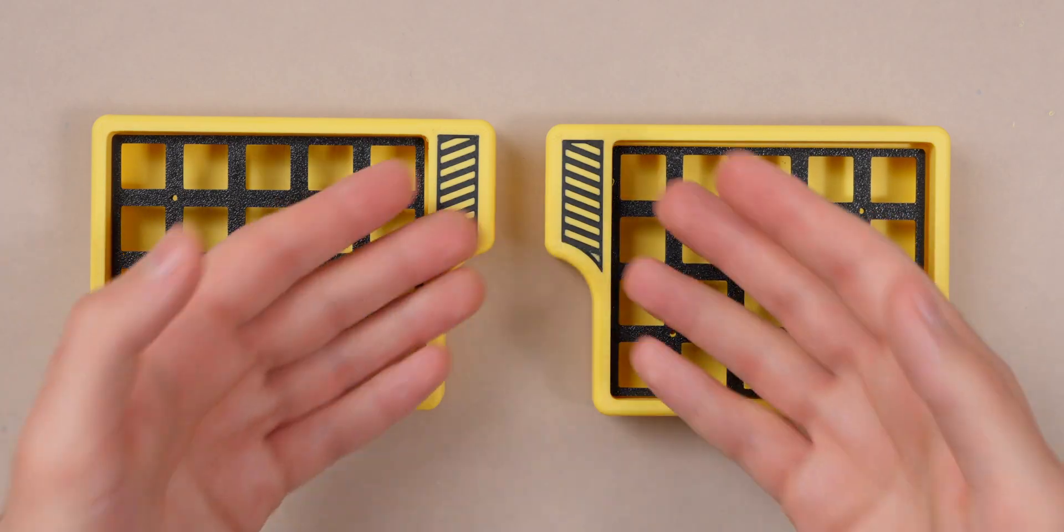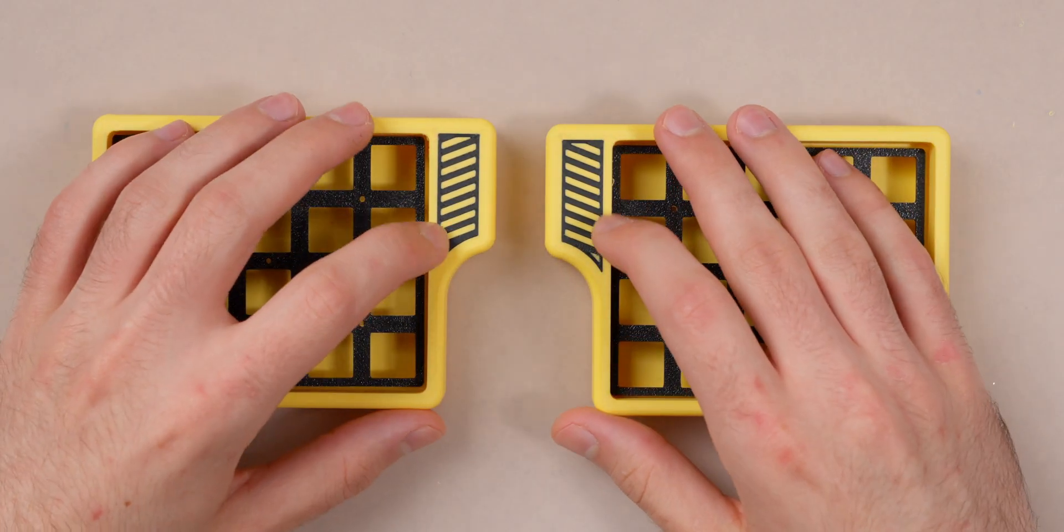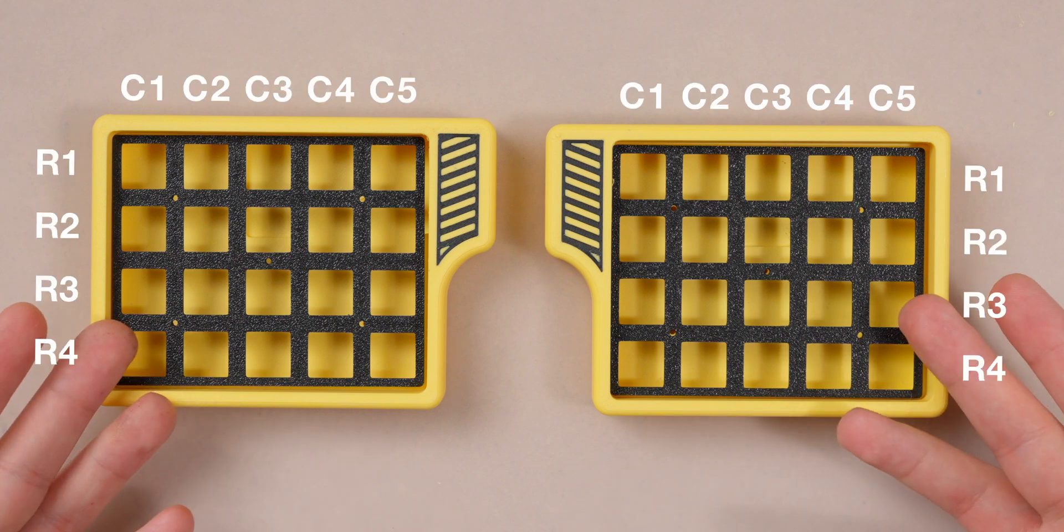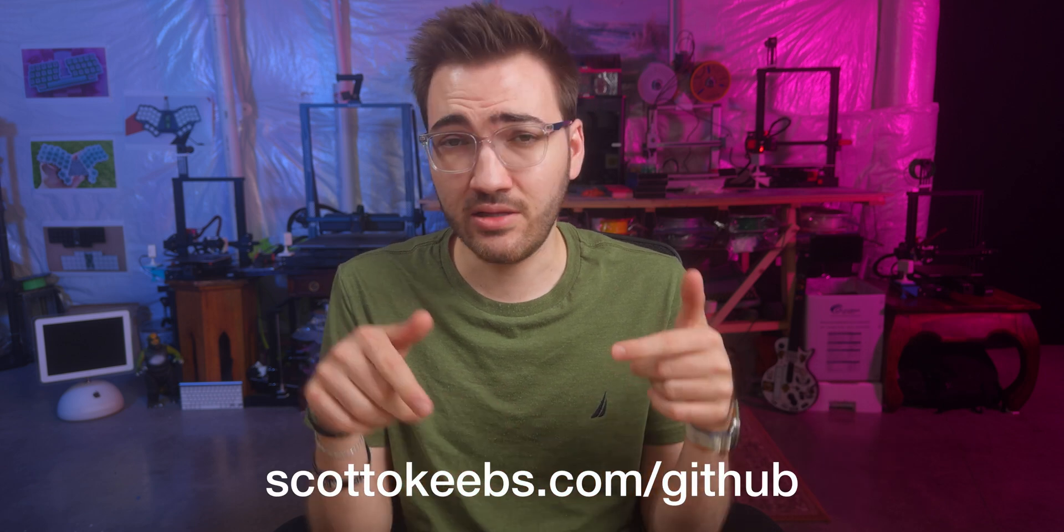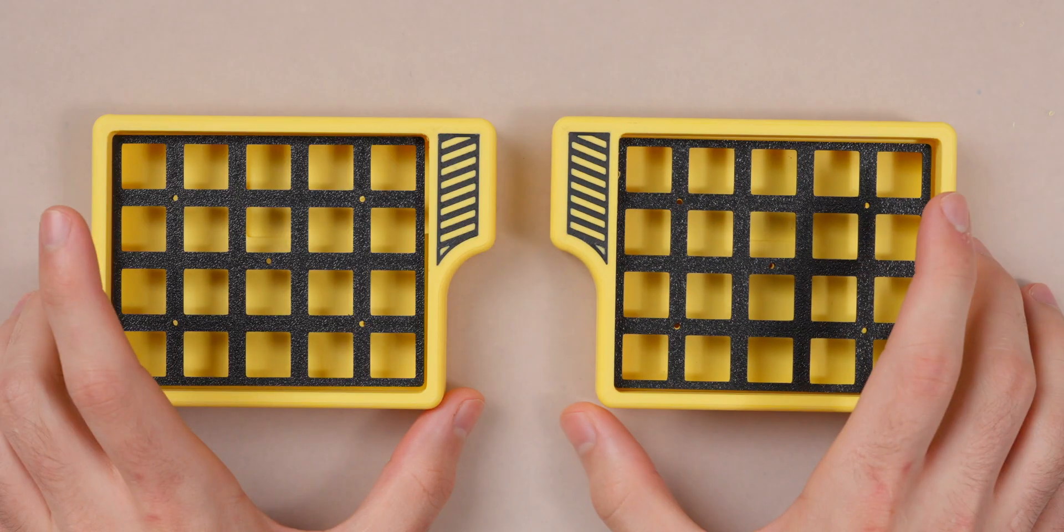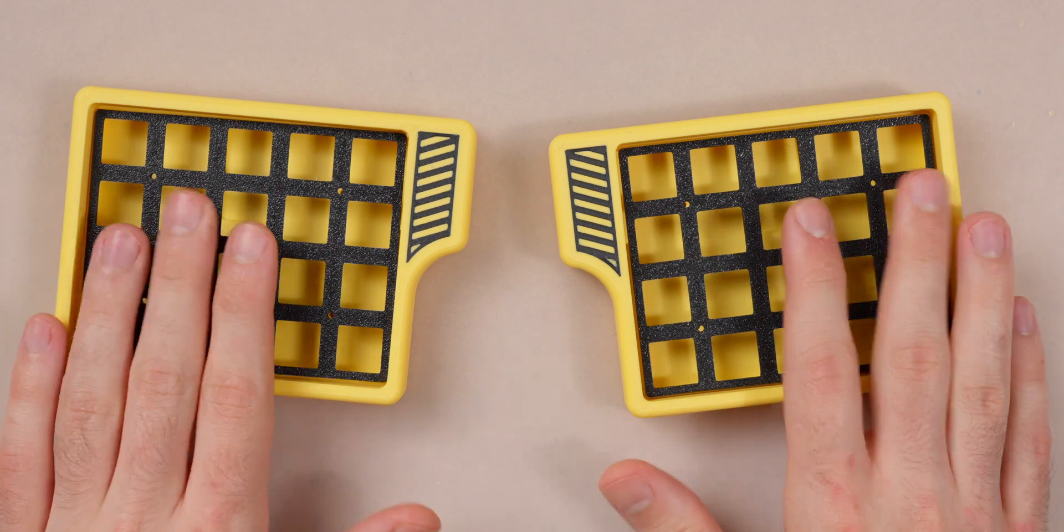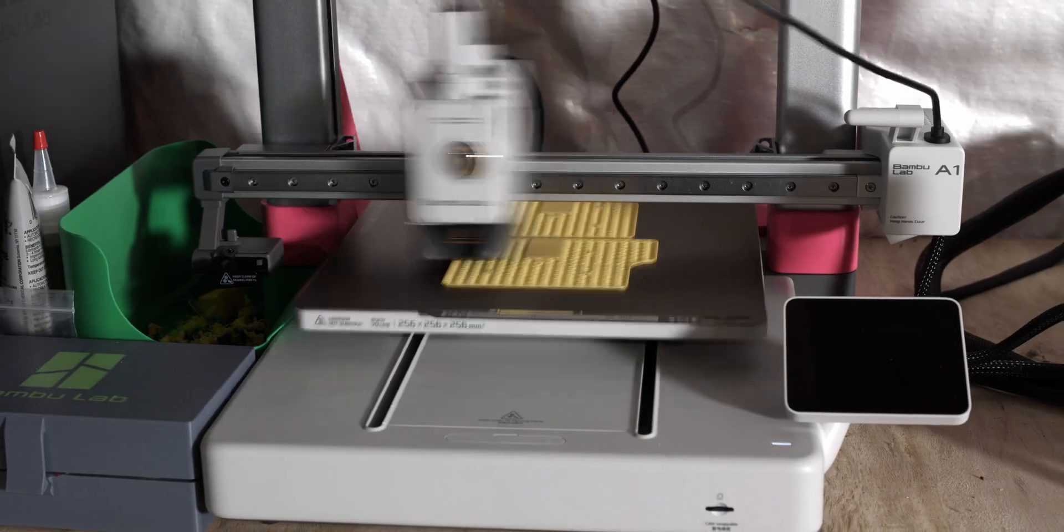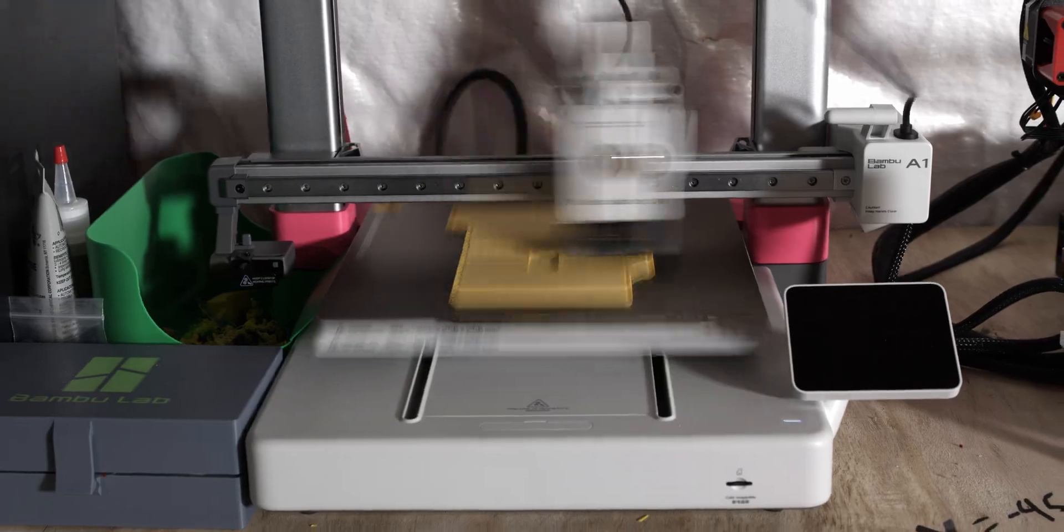This here is the Scato hazard. I'm calling it that because of this little caution tape design right here. It's a simple 4x5 layout on both halves. This does also come in a 4x6 layout if you want to build that, and if you're not aware, all my hand wire boards are available for free. I'll link them in the description. This was printed on my Bamboo A1 so it printed really nice.